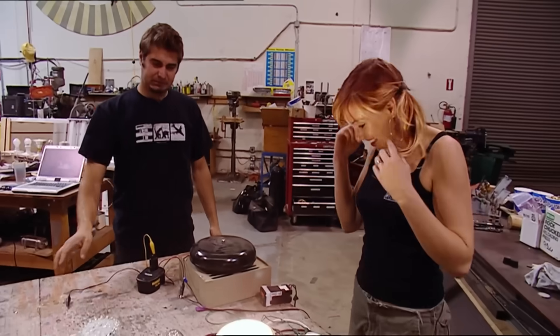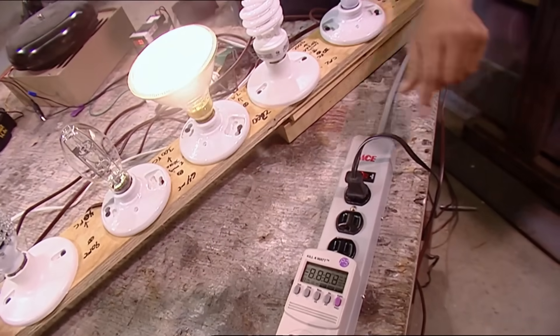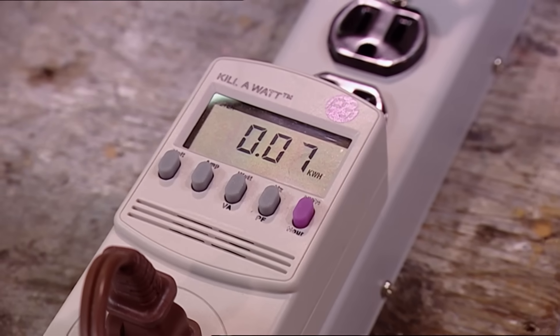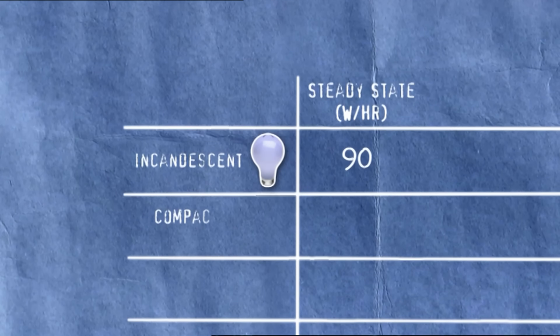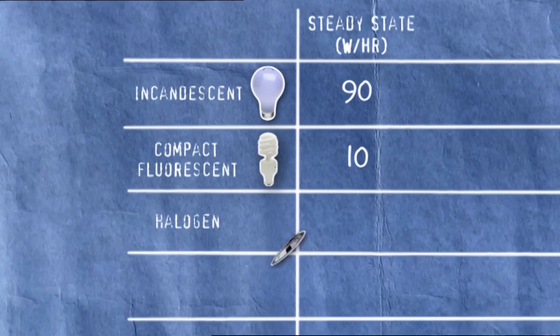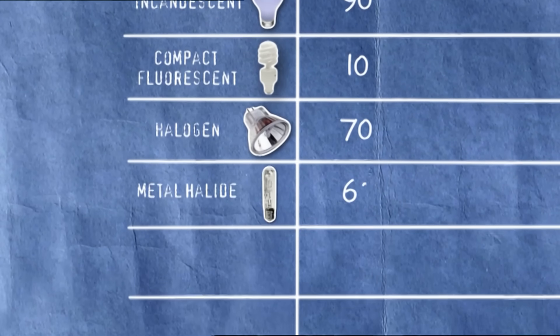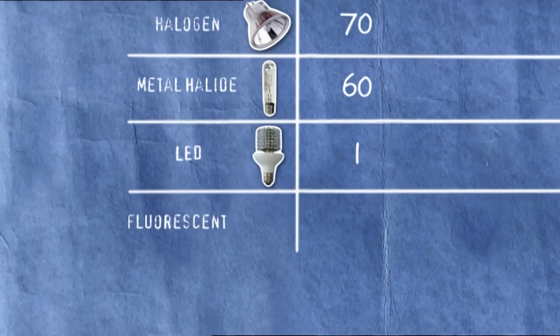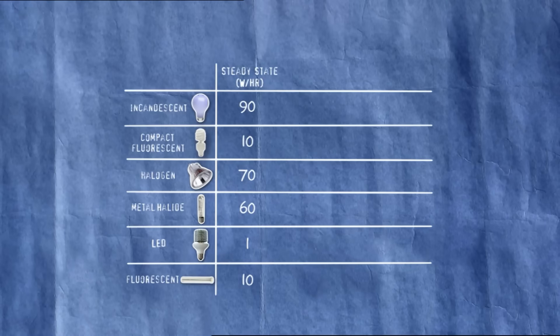To answer this important question once and for all, the team are halfway through their experiment. They found out how much energy six types of light bulb use when they're on, and now they need to see how this compares to the energy surge that happens on startup.